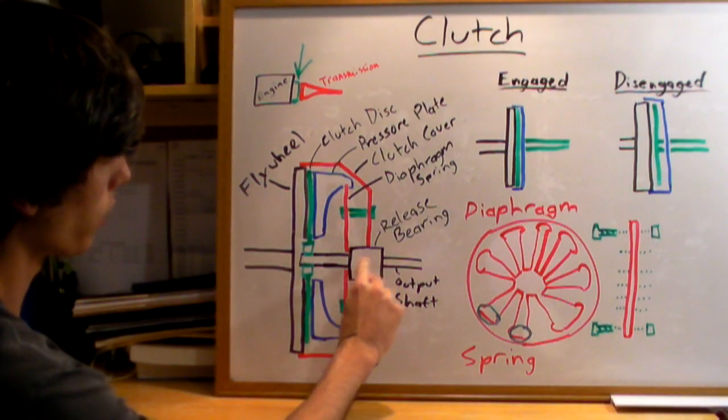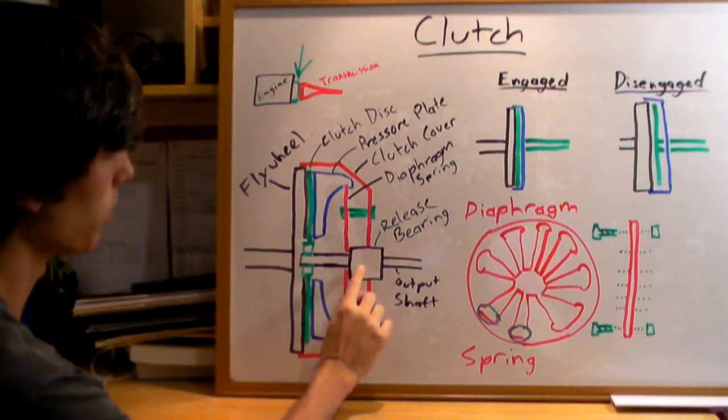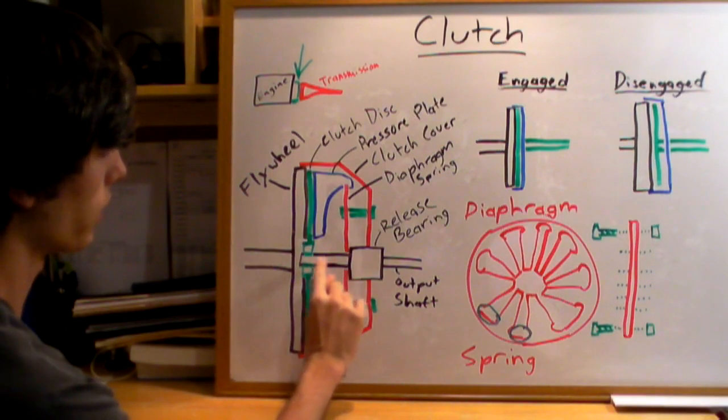And here is what you're actually going to be moving with your foot when you push in that clutch pedal. You're going to be moving this release bearing, and then you've got the output shaft.